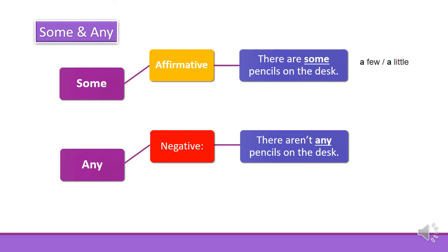We use any in negative sentences. For example, there aren't any pencils on the desk. In this case, any means none, none at all, nothing, zero. There aren't any pencils on the desk.